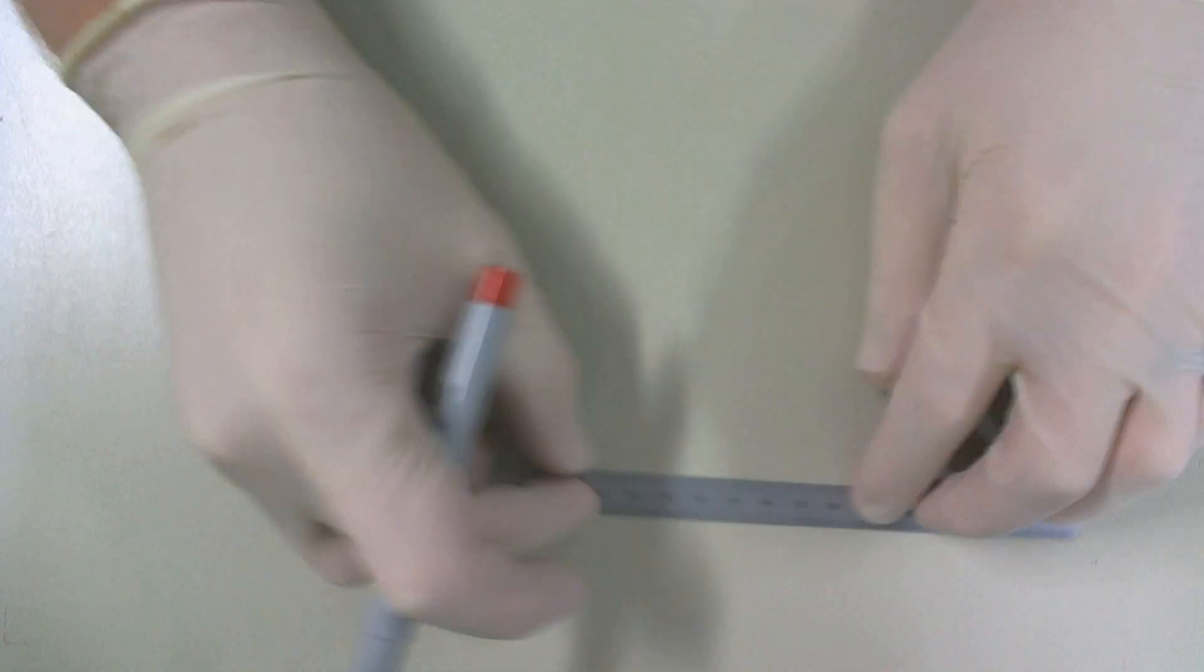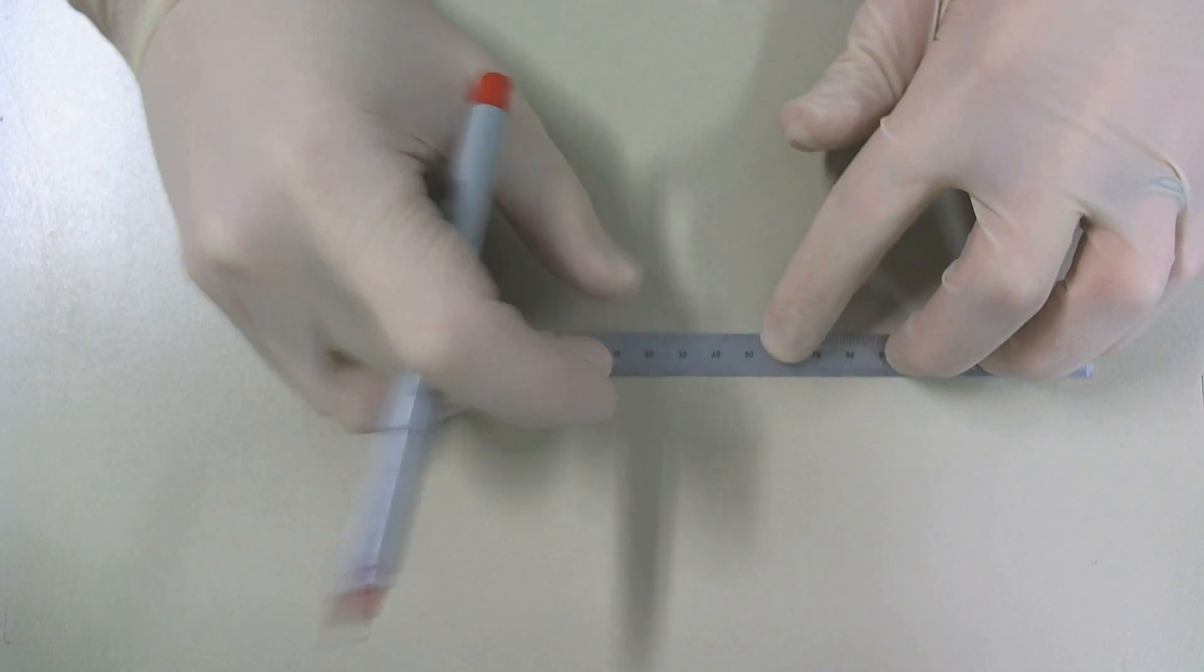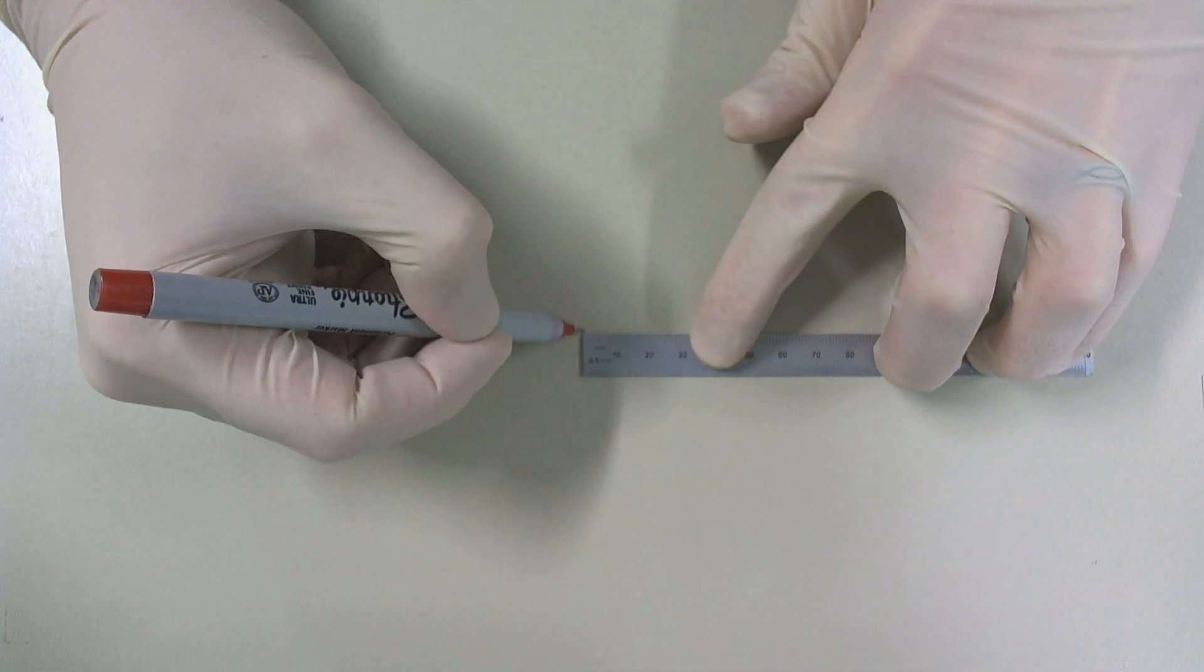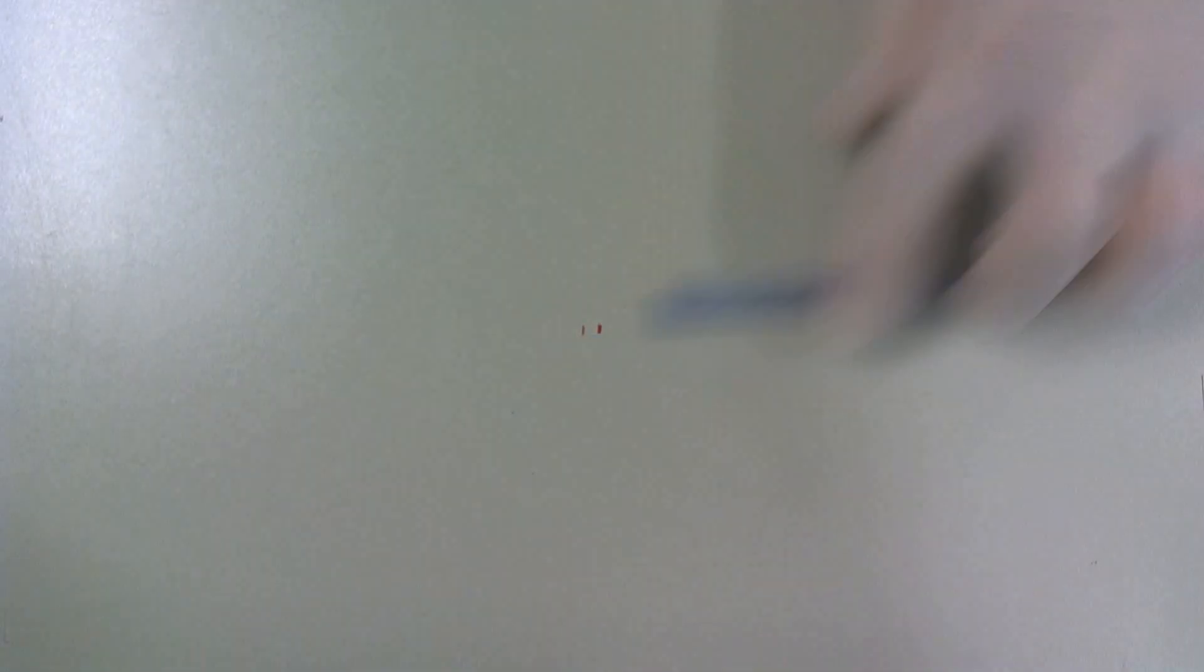Once the table is clean, I will mark the table with two hashes that are spaced approximately five millimeters apart. I do this because it helps me keep the flow cells uniform when I'm preparing them.